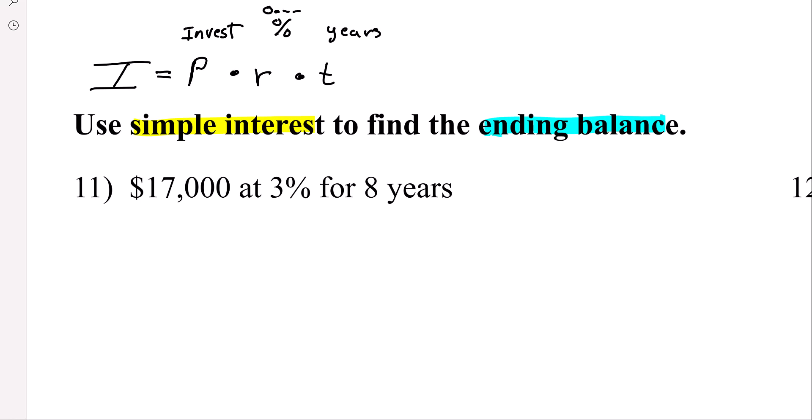So interest, if we want to find the interest, here's the principal, here's the rate - we're going to change that to 0.03 because you move the decimal two places, and then here's the time.